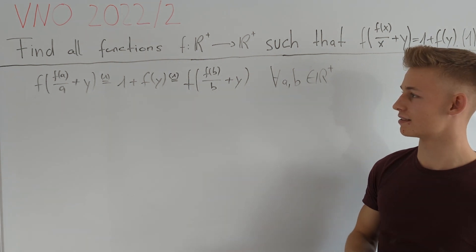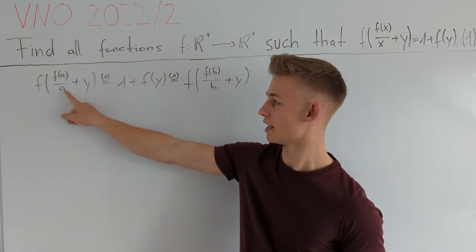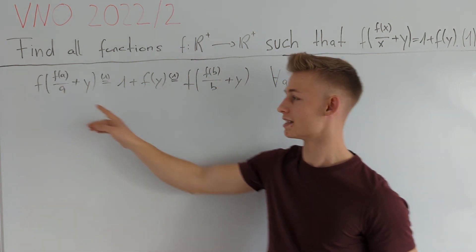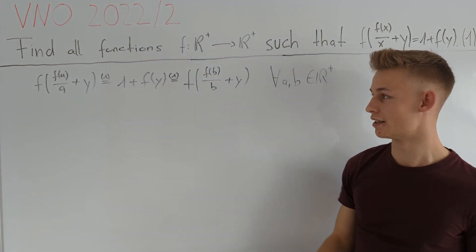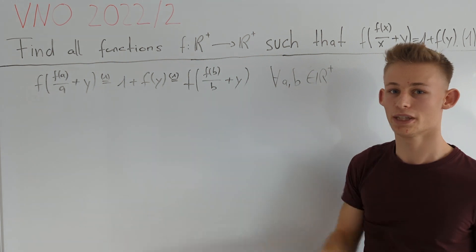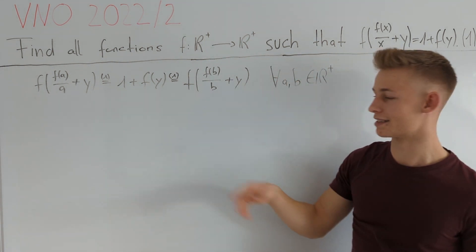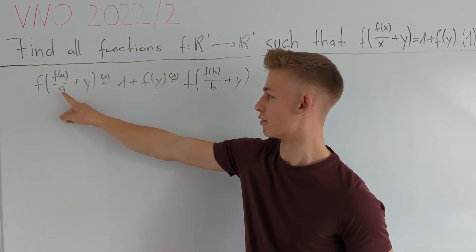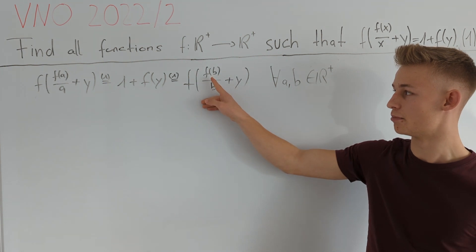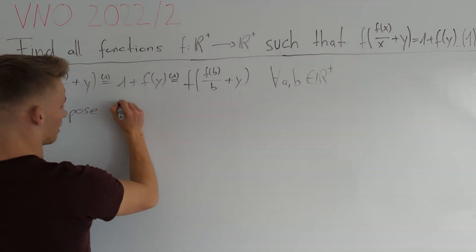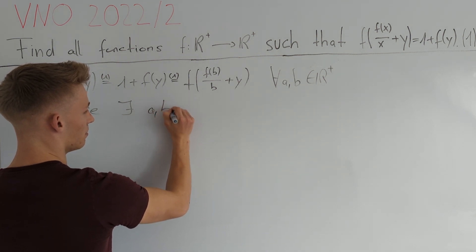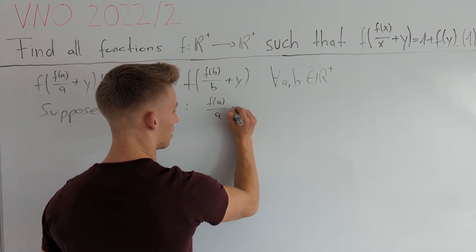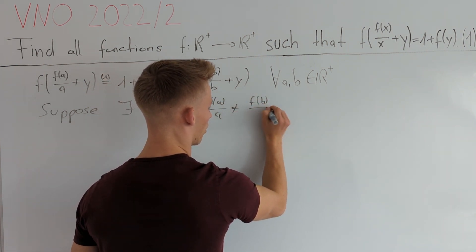We see that the function has the same value at the arguments f(a)/a + y and f(b)/b + y. This is clear if f(a)/a equals f(b)/b. But if f(a)/a is not equal to f(b)/b, then we have two different arguments with the same function value. So suppose there exist some a and b such that f(a)/a is not equal to f(b)/b.